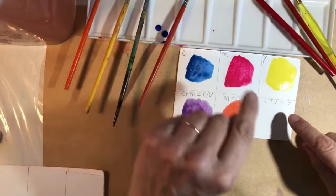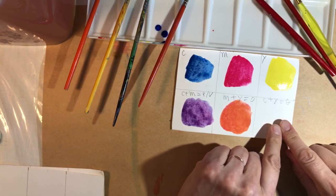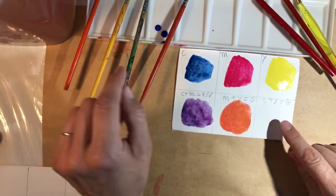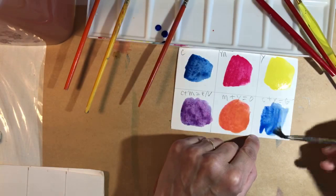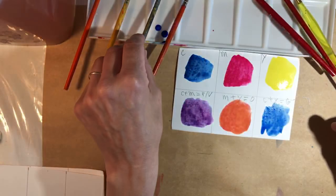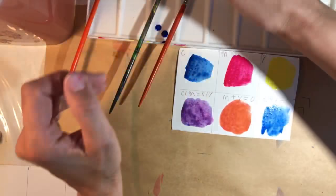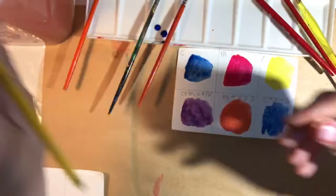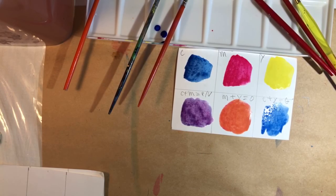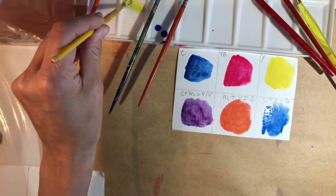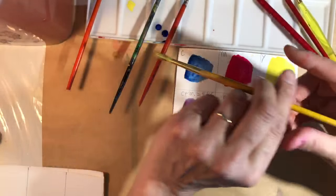And the last color over here, we're supposed to get cyan in that square, and yellow. Let's see what type of green we're going to get from this. You know what? I contaminated my yellow. Beg your pardon? I'm going to create a new puddle of yellow over here.